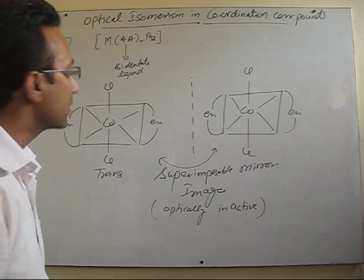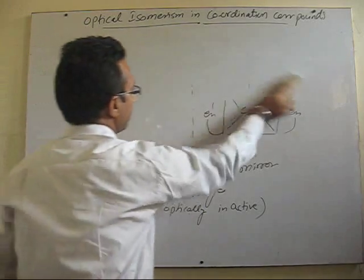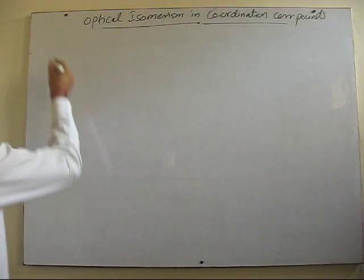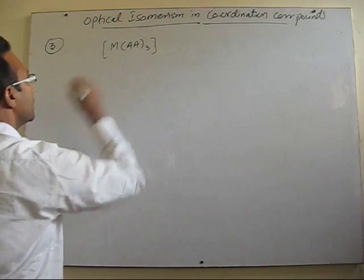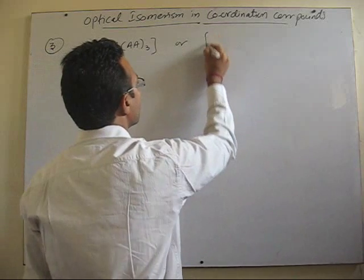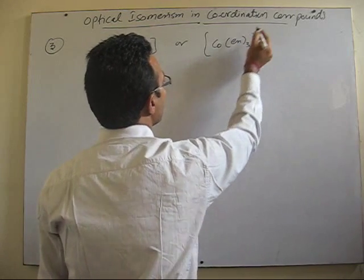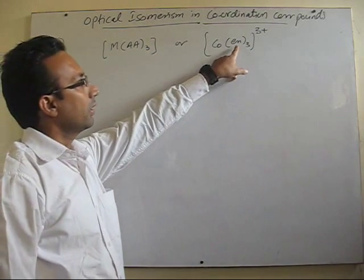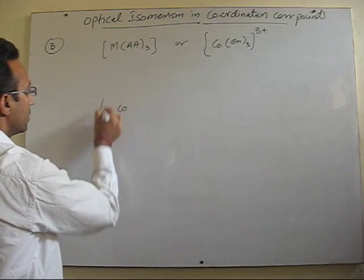Now we finish with two types of examples. I will take another very important type of example — the third one — in which only one type of ligand is present but its nature is bidentate. We can say in general it is the AA₃ type of compound. Here AA is a bidentate ligand with same donor atoms. I take one example of cobalt in its +3 oxidation state, where En (ethylenediamine) is the bidentate ligand with same donor atoms, that is nitrogen.